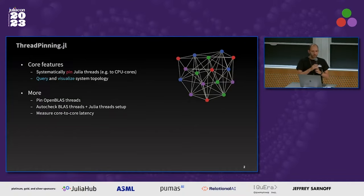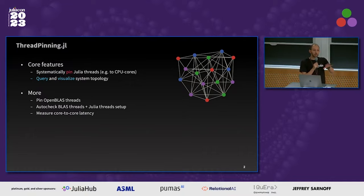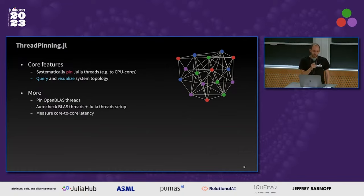So what is ThreadPinning.jl? It's a package I created to pin Julia threads systematically and interactively — you'll see an example in a second. While writing it, I realized it would be nice to query and visualize the system first, so that you see what you're actually pinning to and whether that's what you want. It can do many more things than just pinning Julia threads: it can pin OpenBLAS threads, it checks whether your thread setup makes sense, and there are tools to measure core-to-core latency and generate nice plots. There are many more features I can't mention here, but feel free to ask me about it later.